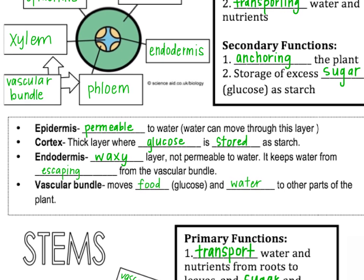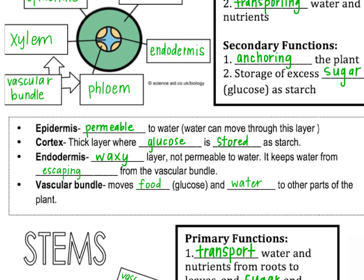Let's go through what each part of the root does. The epidermis is permeable to water — that means water can soak into it — which is important in the roots because that's where the plant soaks up water to be transported to other parts. The cortex is the layer for storage; if there's any extra glucose the plant wants to store for a time when there might be a shortage, it stores it in the cortex. The endodermis is a waxy layer that's not permeable to water, so unlike the epidermis, it doesn't let water pass through. It keeps water from escaping from the vascular bundle so water can move up without seeping out.